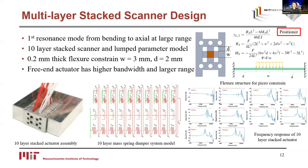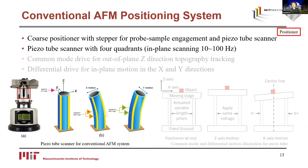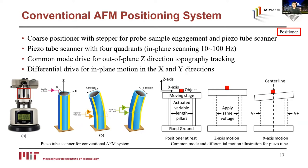Now let's look at the operational principle of a conventional AFM positioning system. A coarse positioner with a stepper motor is typically used for probe-sample engagement, and piezo tube scanners with four quadrants are used for scanning, typically below 10 lines per second. Out-of-plane z-direction motion is realized by common-mode drive — applying similar voltage to all four quadrants. When differential voltage is applied, a tilt of the sample creates in-plane motion. Since the motion is on the order of microns and the scanner dimension is on the order of centimeters, the tilt angle is very small and can be compensated easily. This design is simple and widely used, though difficult to improve bandwidth due to bulk size and coupled motion.